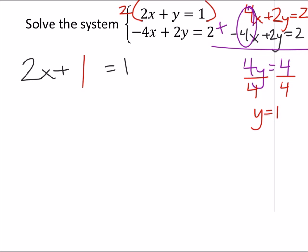Solving for x, I would subtract 1 from both sides and I got 2x equals 0. Dividing both sides by 2, we see that x is 0.